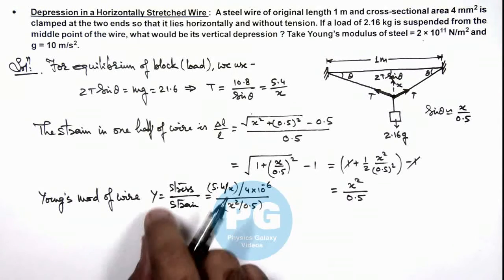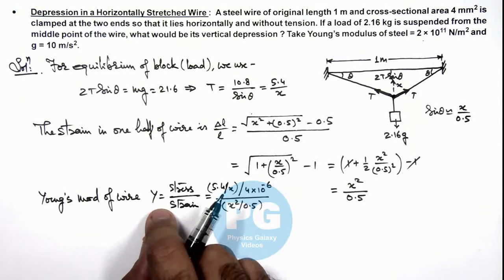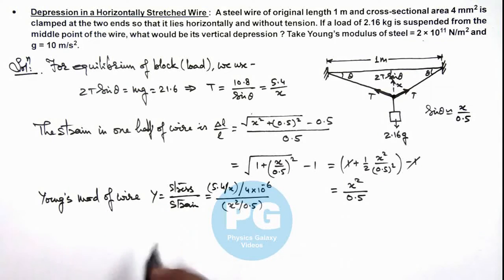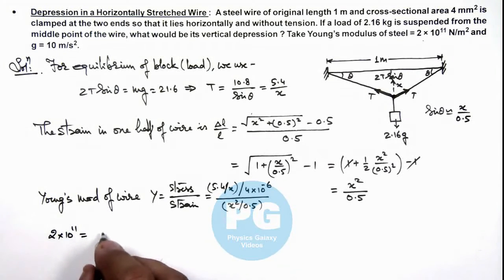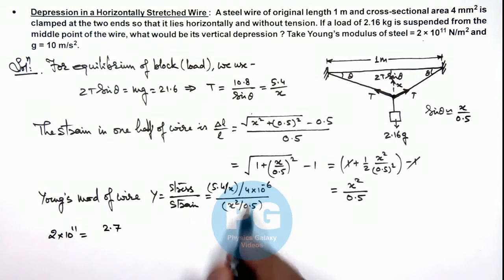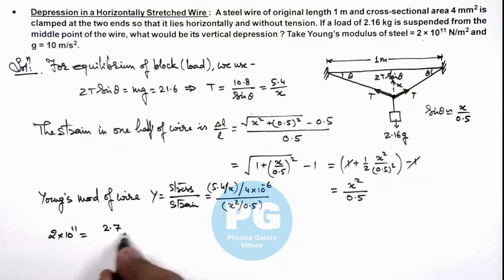If we substitute the value of Young's modulus here, you can see this will give us 2 into 10 to power 11 is equal to, simplifying these terms we are getting the numerical value to be 2.7, this is 5.4 by 4 multiplied by 0.5. So this will give 2.7 divided by 4 into 10 to power minus 6 times x cube.